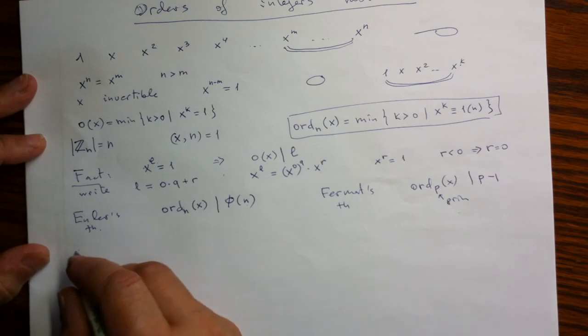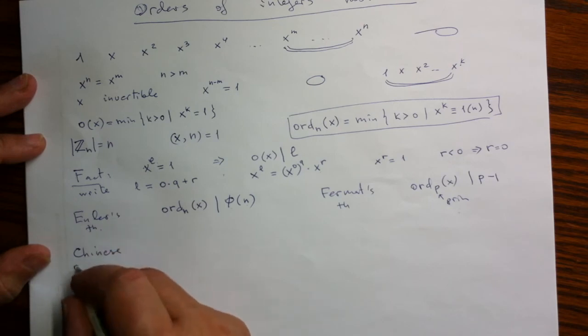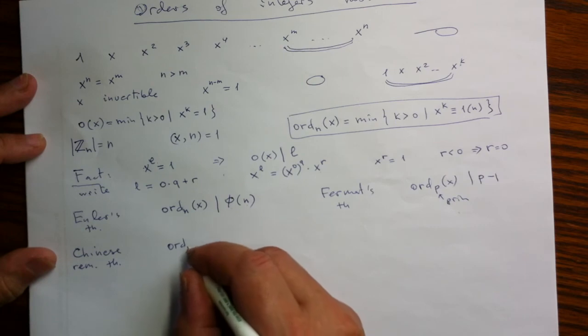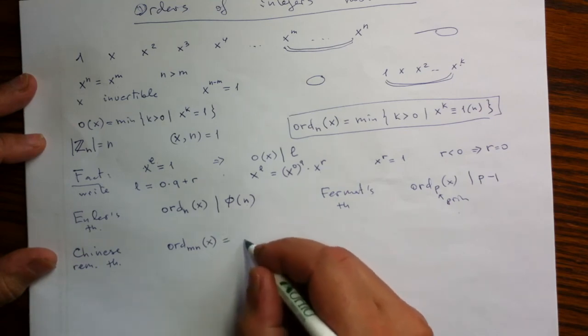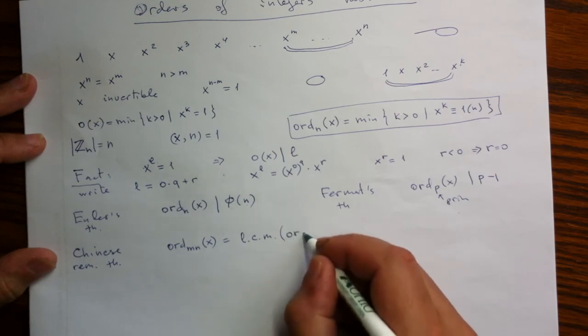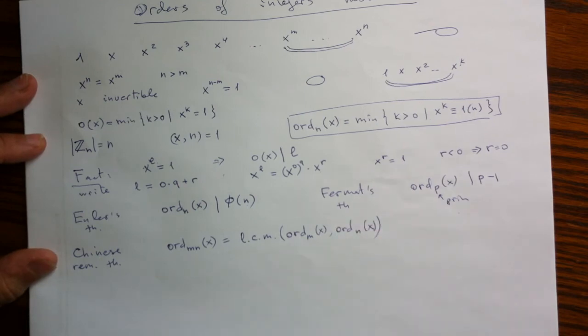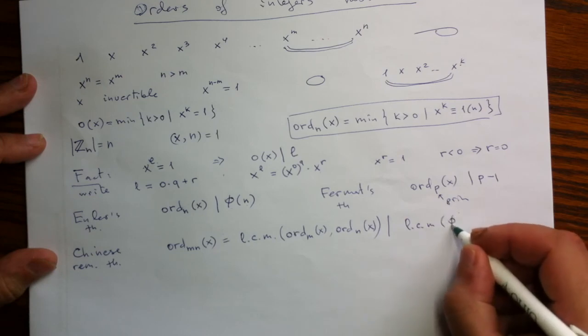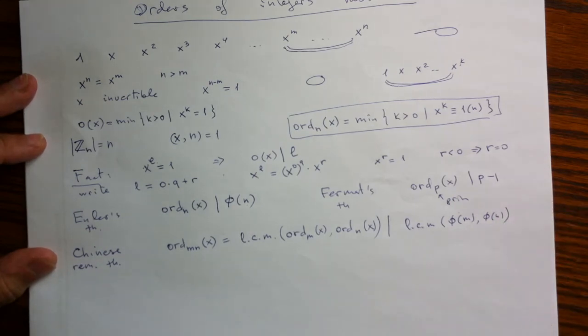The strictification of this consequence of Euler's theorem comes from Chinese remainder theorem, which says that the order modulo the composite modulus, say m times n, of anything is equal to the least common multiple of the orders modulo the factors. And in particular, that number divides the least common multiple of Euler functions of m and n. That is better than the product. The least common multiple is very often way smaller than the product. And that is an improvement.